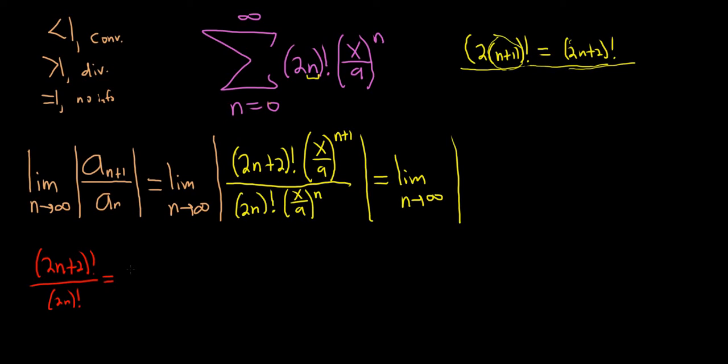So we have 2n plus 2 factorial over 2n factorial. So, 2n plus 2 factorial is just 2n plus 2. And then as with any factorial, you just keep subtracting 1 over and over again. So when we subtract 1 from 2n plus 2, that becomes 2n plus 1. And then if you subtract 1 again, it becomes 2n. Subtract it again, it becomes 2n minus 1, etc. You keep doing it all the way until you get to 3, 2, 1.